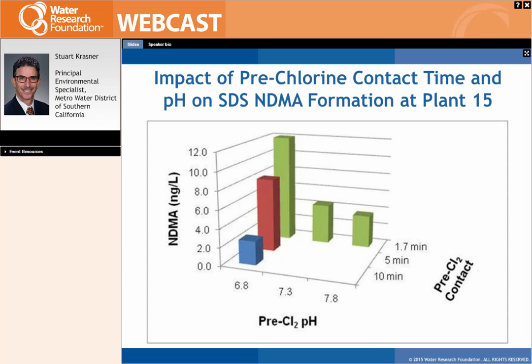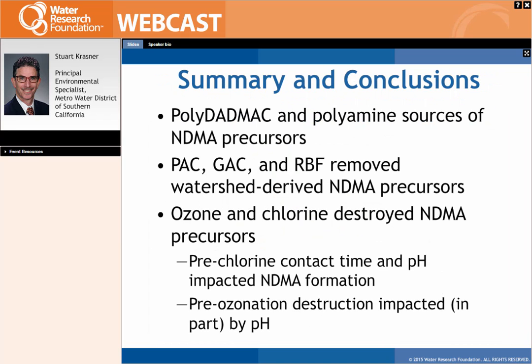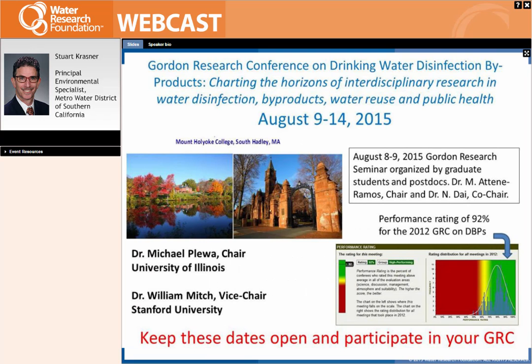In summary of the full-scale studies: polyDADMAC and polyamine were important sources of NDMA precursors; powdered activated carbon, granular activated carbon, and riverbank filtration effectively removed watershed-derived NDMA precursors, while the plant dominated by polyDADMAC precursors did not achieve effective removal with GAC; ozone and prechlorination both destroyed NDMA precursors, with prechlorination effectiveness depending on contact time and pH, and ozone effectiveness influenced by the pH at which ozonation occurs.